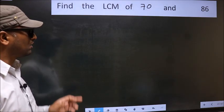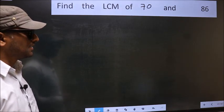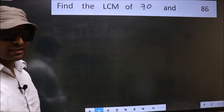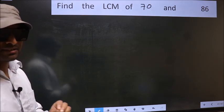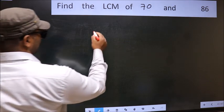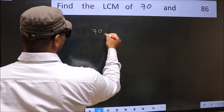Find the LCM of 70 and 86. To find the LCM, we should frame it in this way: 70 and 86.